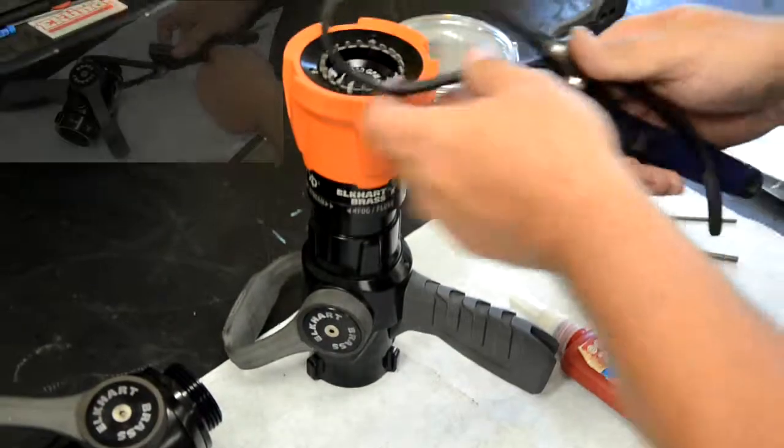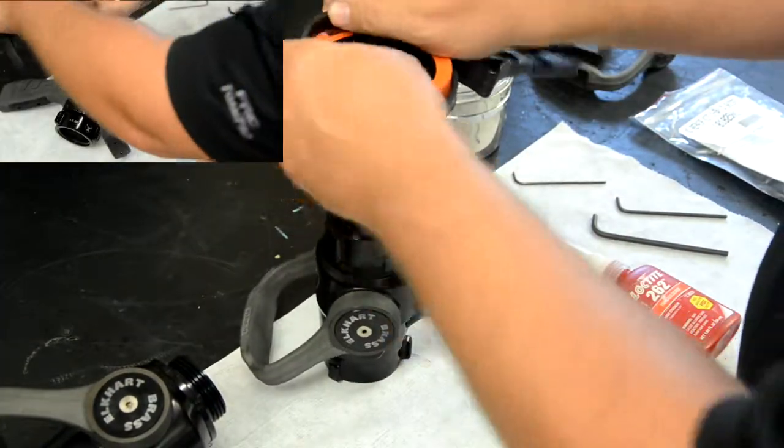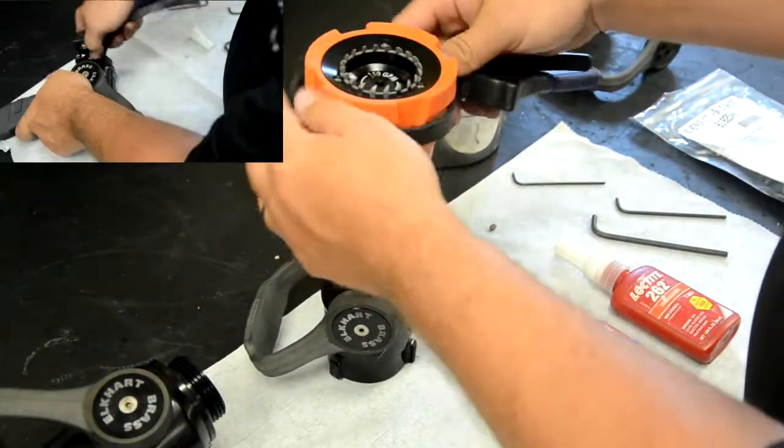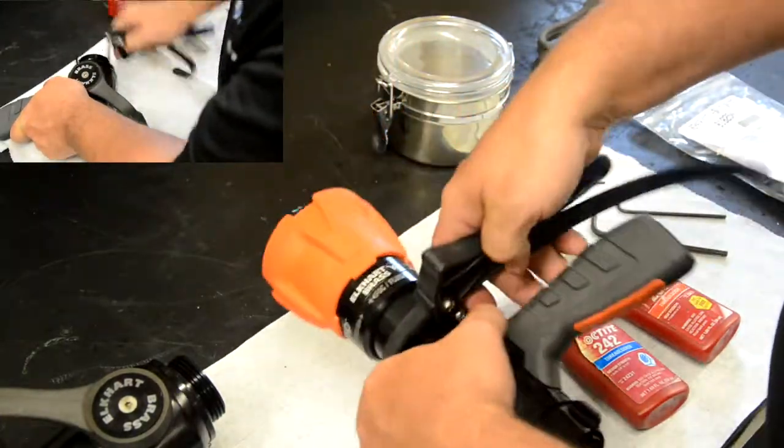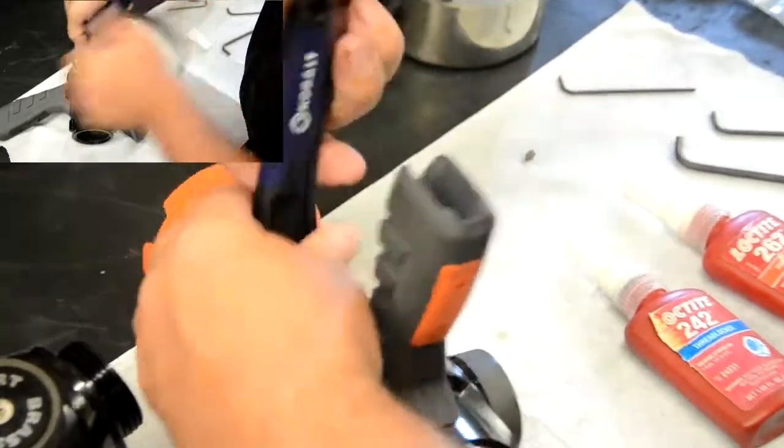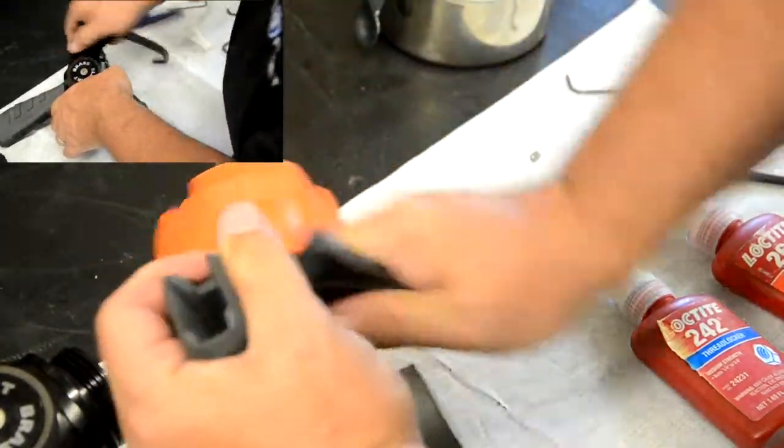Next, use the strap wrench and remove the nozzle tip from the shutoff body, or the adapter outlet if working on an XD shutoff. Also, make sure to clean and remove any dirt or debris from all threaded parts throughout this entire procedure.